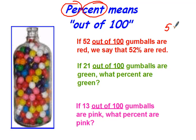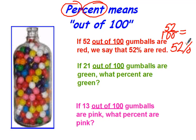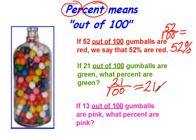52 out of 100 is the same thing as 52%. And if you look closely, the percent sign looks like 100. If 21 out of 100 are green, we would say 21 out of 100, or we would say 21%. Percent means a number out of 100.